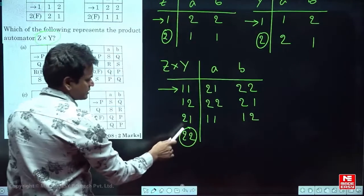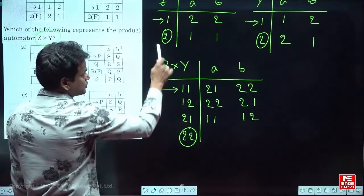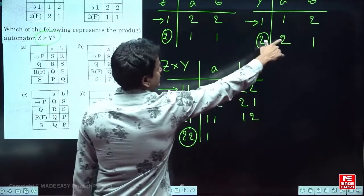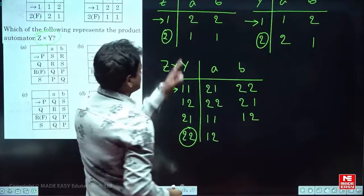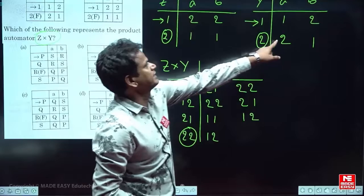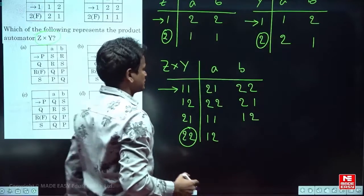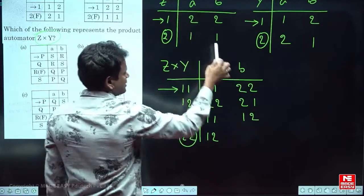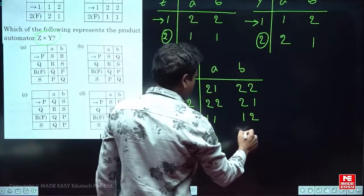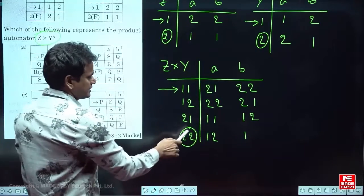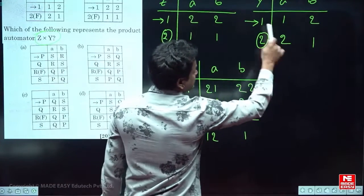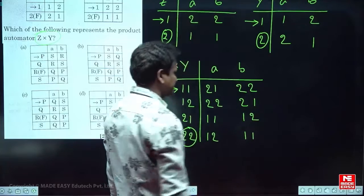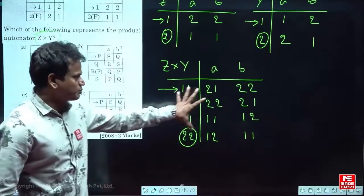For state 2,1: from Z, 2 on A gives 1; from Y, 1 on A gives 1. So 2,1 on A goes to 1,1. For 2,1 on B: from Z, 2 on B gives 1; from Y, 1 on B gives 2. So 2,1 on B goes to 1,2. For state 2,2: from Z, 2 on A gives 1; from Y, 2 on A gives 2 — so 1,2. From Z, 2 on B gives 1; from Y, 2 on B gives 1 — so 1,1. This is the full transition table.